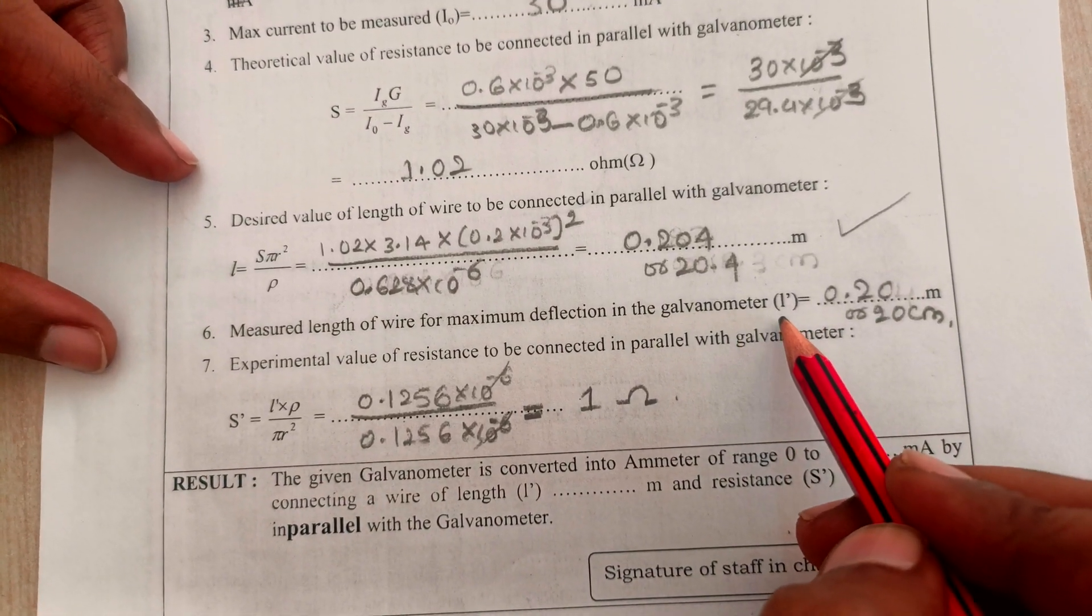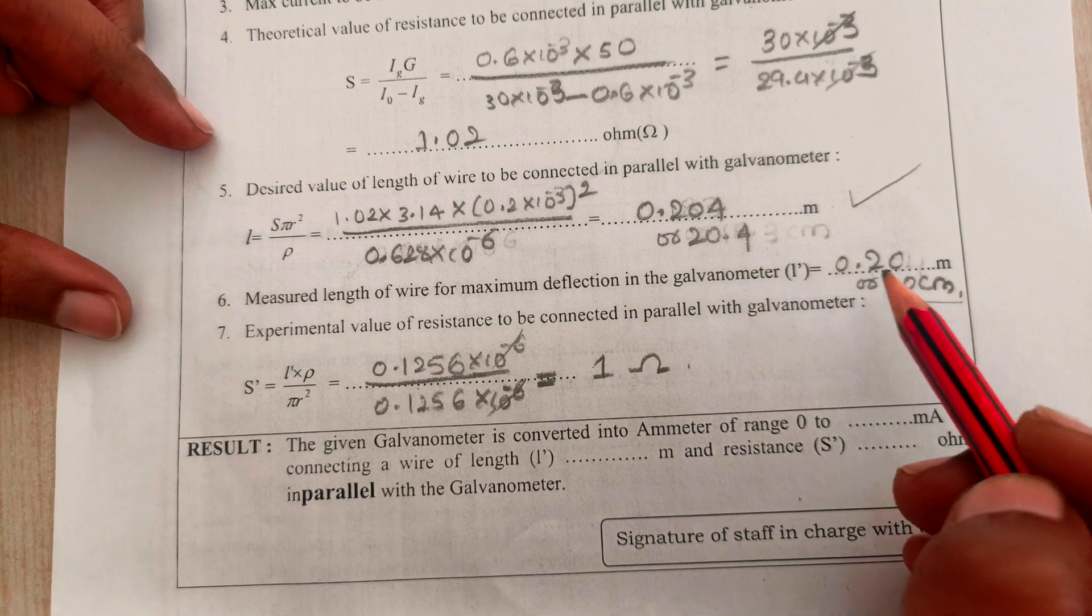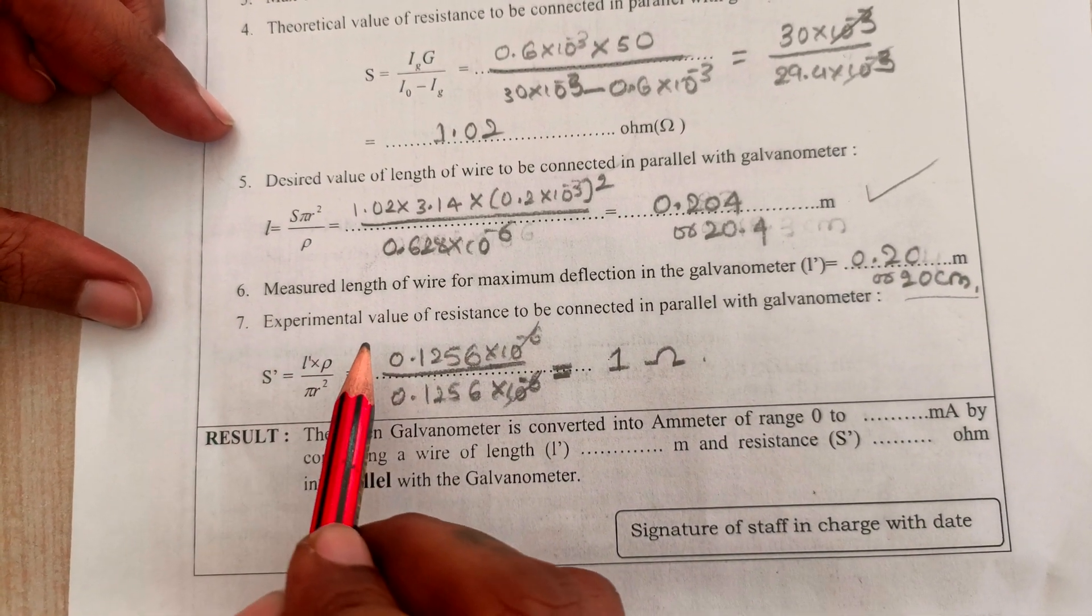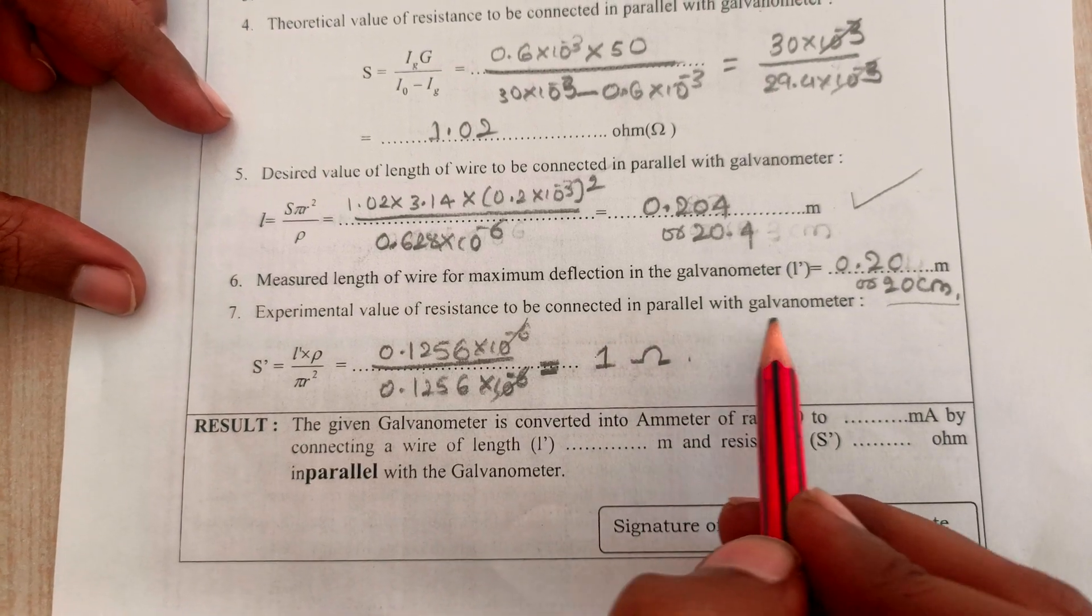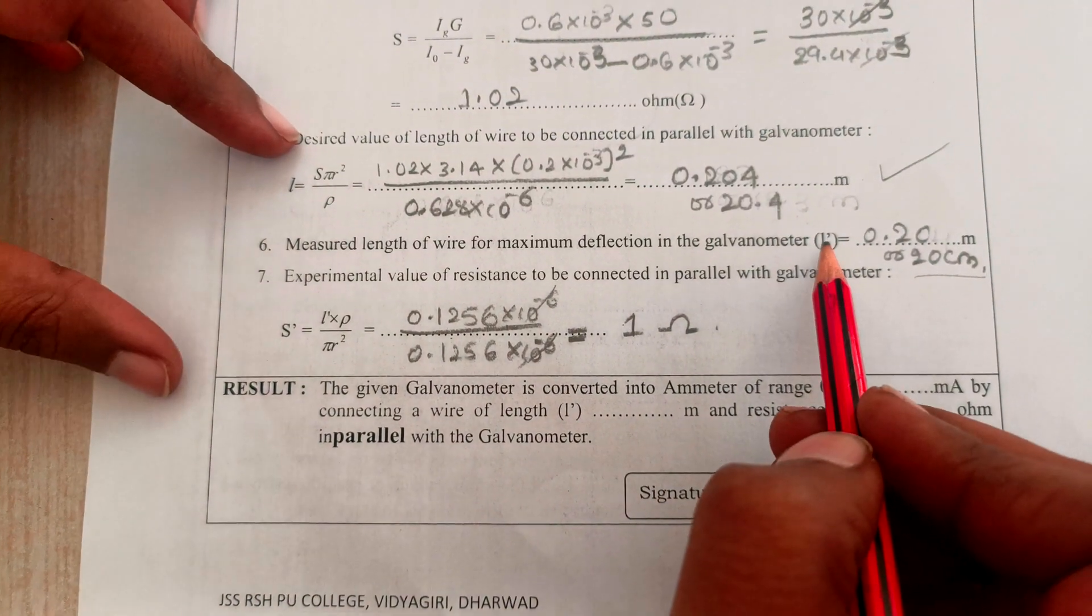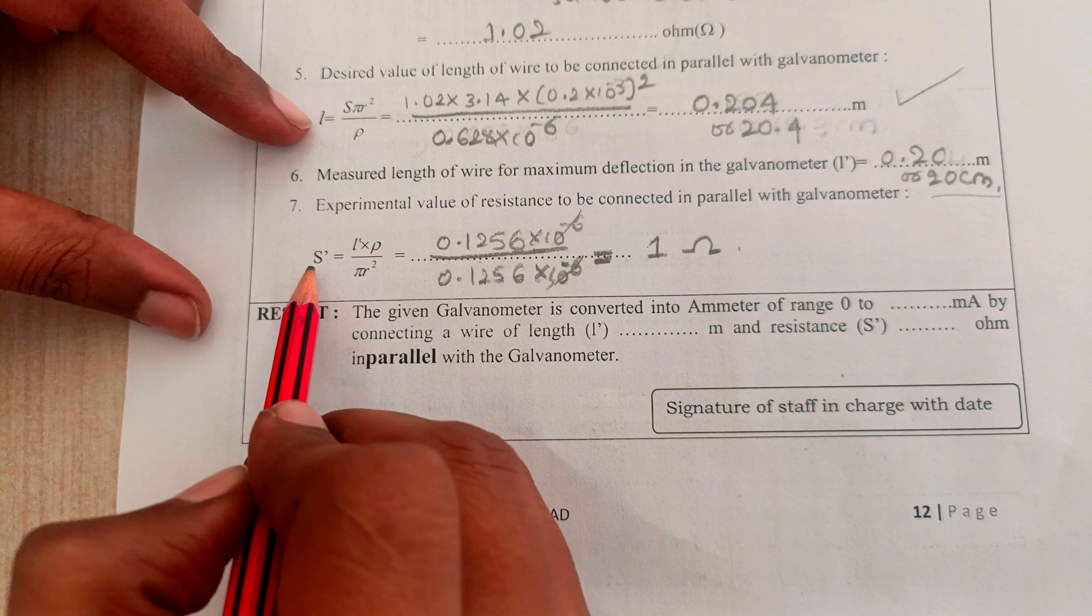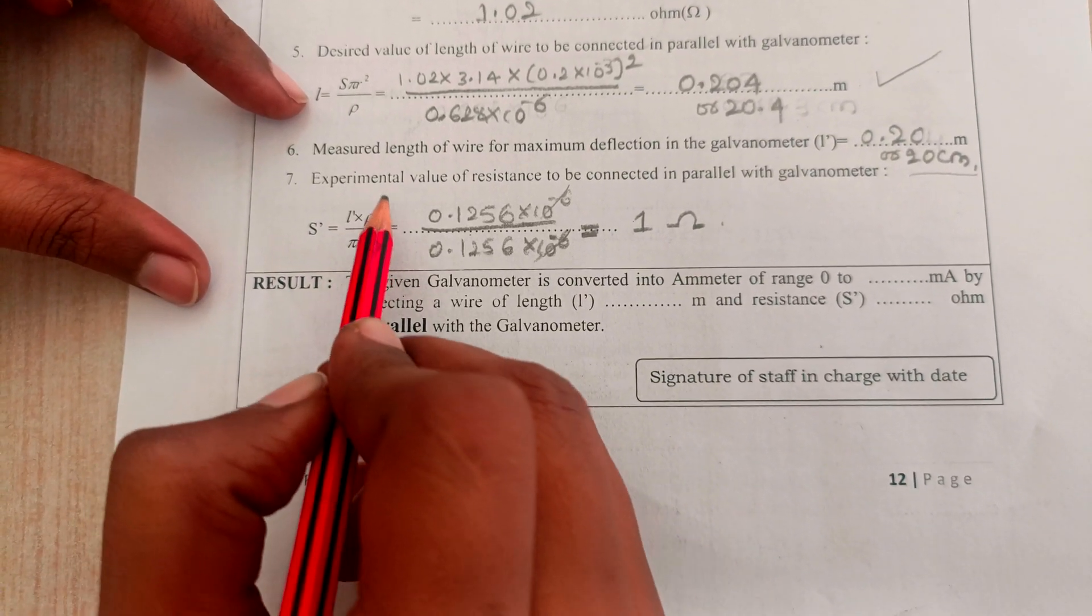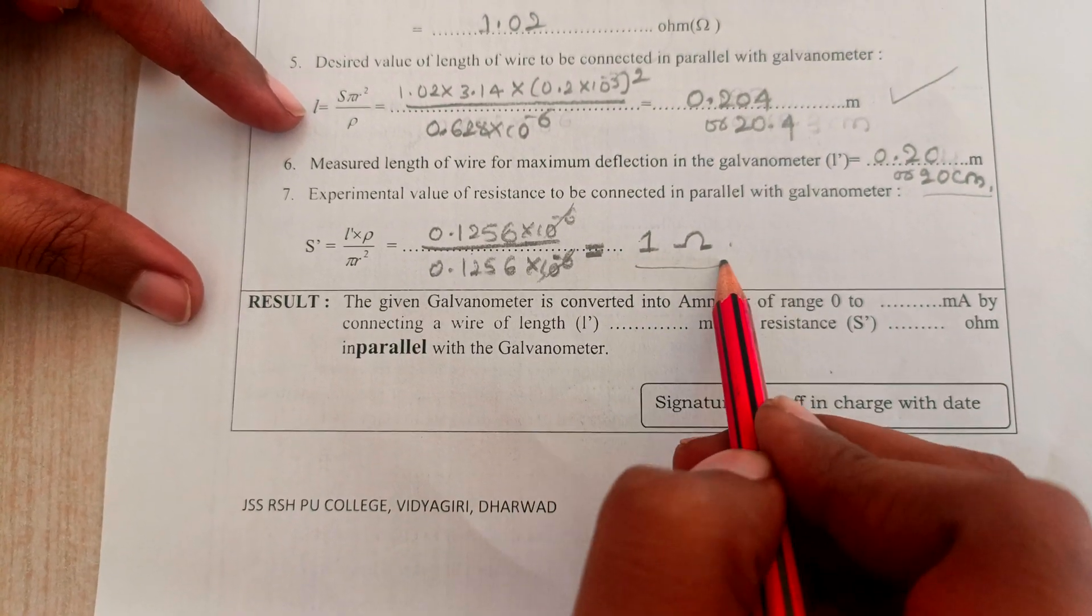By doing the experiment, we are able to find the practical length for maximum deflection in the galvanometer, which is found to be 20 cm or 0.2 meters. We are going to find the experimental resistance that has to be connected in parallel with the galvanometer using this l' length. S' = l' × rho / (pi × r²), so the result is 1 ohm.